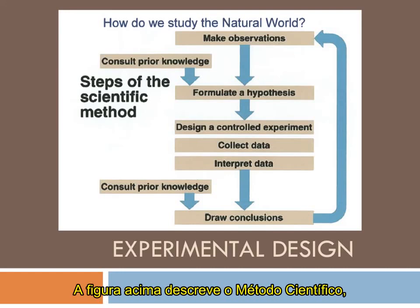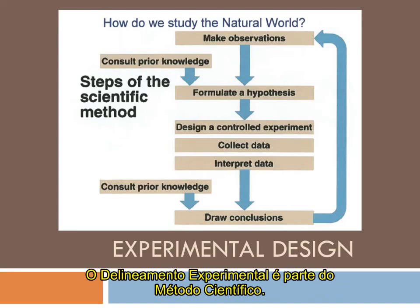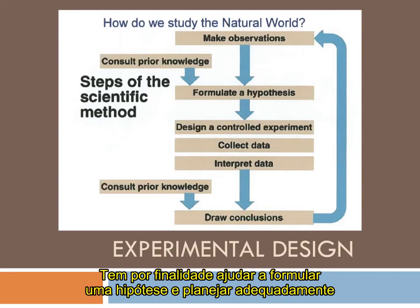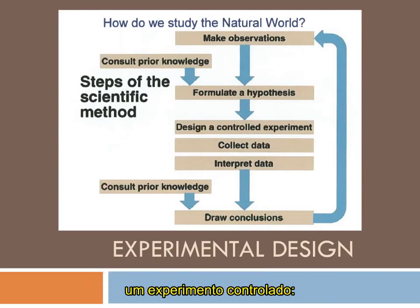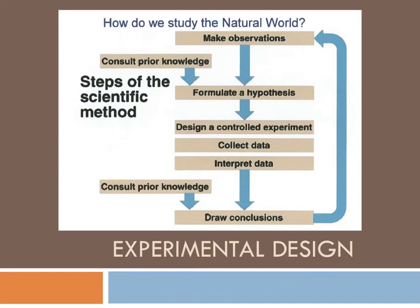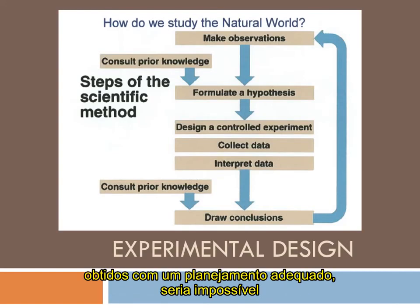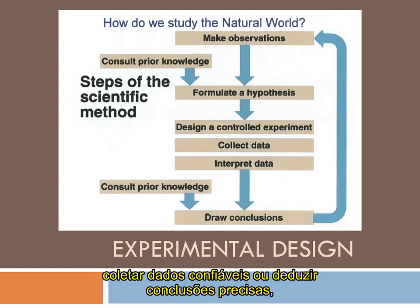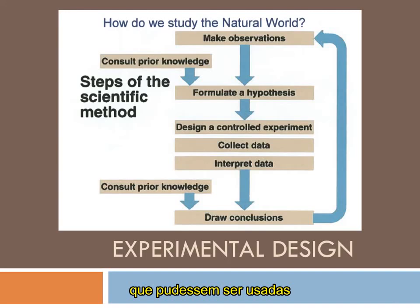The picture above outlines the scientific method, a means for studying the natural world. Experimental design is part of the scientific method. Its purpose is to help formulate a hypothesis and properly design a controlled experiment — two important steps found in the middle of the chart. Without utilizing experimental design properly, it would be impossible to collect legitimate data or to draw accurate conclusions that can be used to gain knowledge about the world.